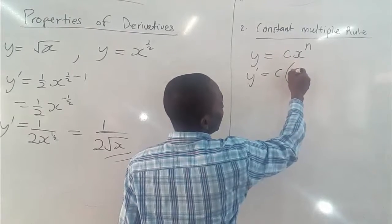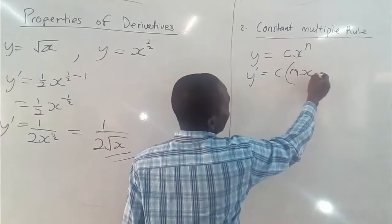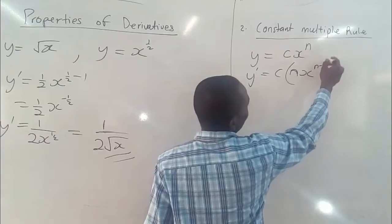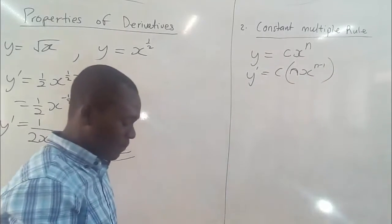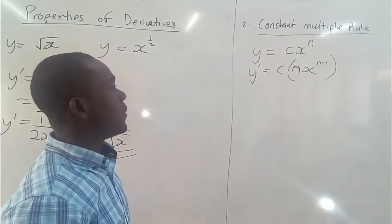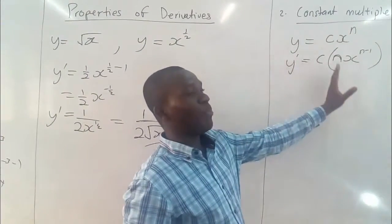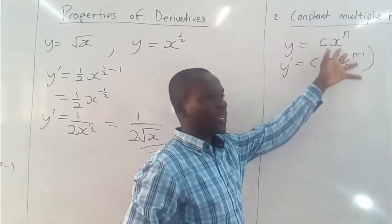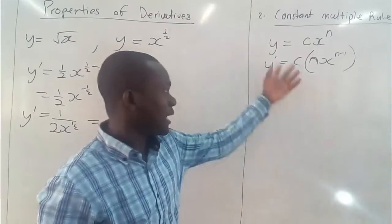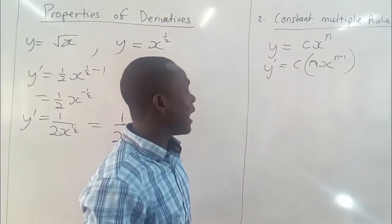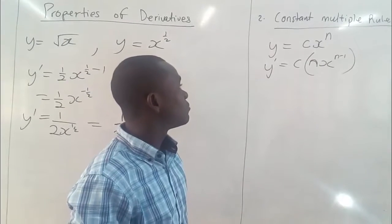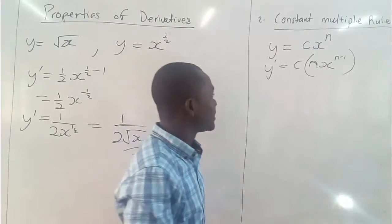So we have n times h to the power n minus 1 like we used to do for the power rule. So when we have a constant, we only separate the constant out and perform the power multiplication of the function. Then after that we can continue with our simplification.